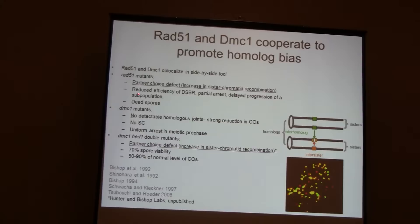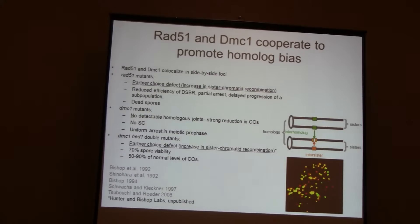This and several other observations tell us there is cooperative function for these two proteins. Rad51 mutants don't form any viable spores and are very defective in homologous recombination, particularly in partner choice. At the stage when recombination occurs, four chromatids are present — two pairs of sisters — and a double strand break can be healed from sequences on the sister, which is almost exclusively what happens mitotically, or from homologous chromatids, which is required for proper meiotic recombination.